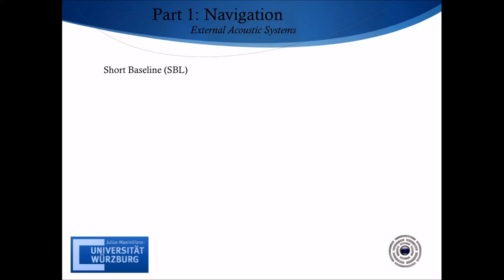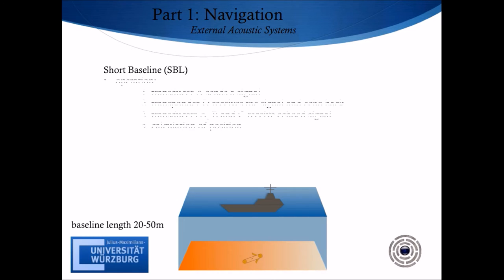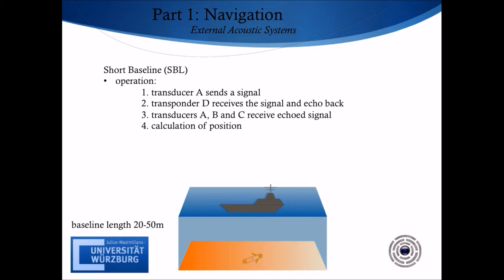The first acoustic navigation type is the short baseline (SBL) with a baseline length of 20 to 50 meters. Three or more separate sonar transducers connected together and centralized are mounted on a supporting vessel. The target object, in most cases a remotely operated vehicle, is equipped with a transponder. Transducer A sends a signal which will be received and immediately sent back by the transponder. Transducers A, B, and C then receive the echoed signal and calculate the resulting target position relative to the location of the baseline transducers. In order to know the target's position in earth coordinates, vessels are mostly combined with a GPS receiver to synchronize with the calculated distances. The accuracy of the SBL system is dependent on the mounting method and the spacing of the transducers. More spacing leads to better accuracy, so that smaller vessels have reduced precision.